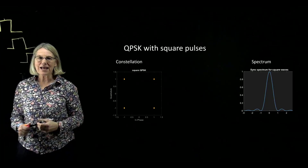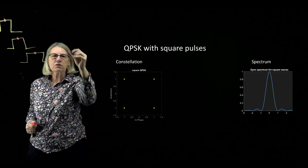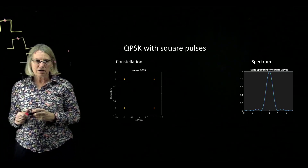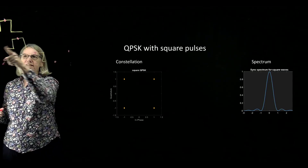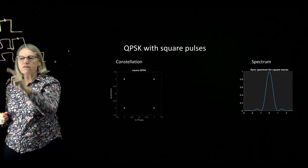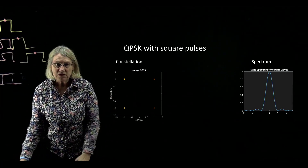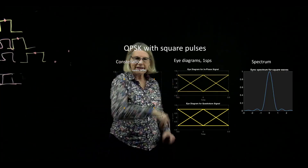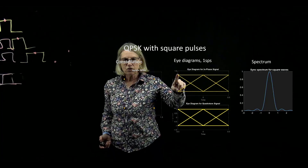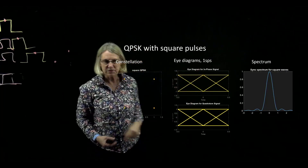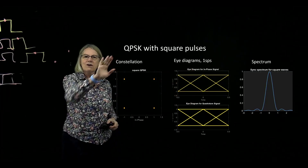If I sample this at one sample per symbol — the next symbol being one, zero, one, etc. — then I can construct an eye diagram. A continuous-time eye diagram would be like taking each pulse, lining them all up, adding them together, and getting something that looks like an eye diagram. Because I'm using one sample per symbol, my eye diagram will show sometimes a plus one and sometimes a minus one, with straight lines drawn between them. This is the one-sample-per-symbol eye diagram in phase and quadrature for QPSK with square pulses.